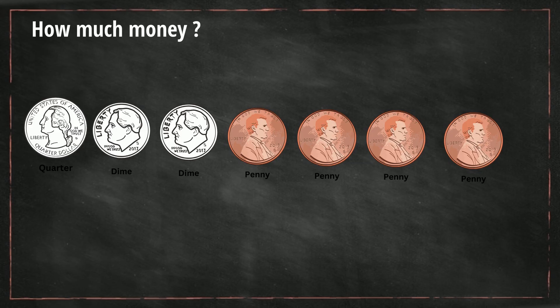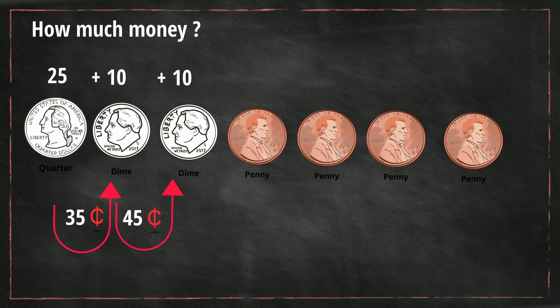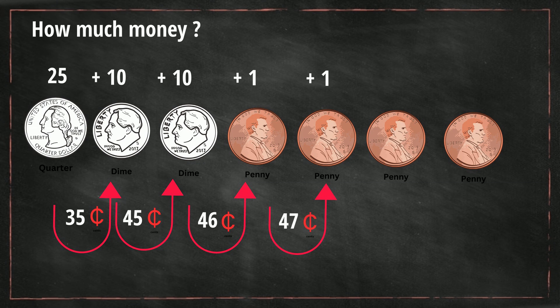We begin with a quarter which is 25 cents, and add a dime which is 10, so that gives us 35. Then let's add another dime, so that makes it 45 cents. Then let's add one penny which is 46 cents, then one more which is 47, another penny which is 48, and finally the last penny which is 49 cents.